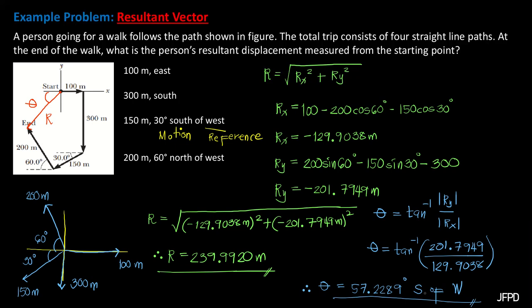We can apply a shortcut to determine the proper direction by looking at the signs of Ry and Rx. When Ry is positive, write north; when Ry is negative, write south. When Rx is positive, write east; when Rx is negative, write west. This gives the direction as south of west in our case.